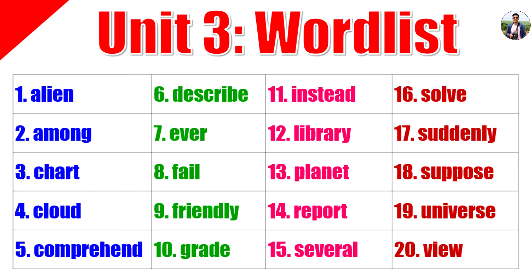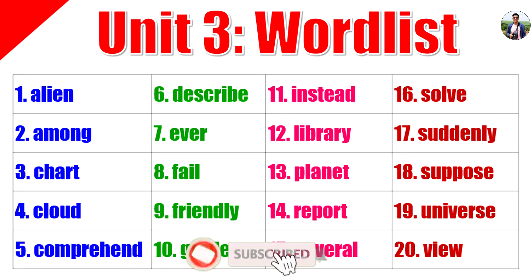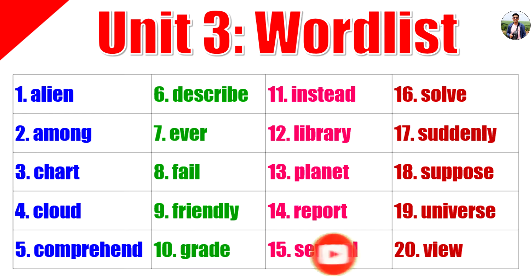4,000 Essential English Words, Unit 3 Word List. Alien: An alien is a creature from a different world. The alien came in peace.